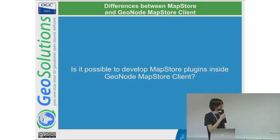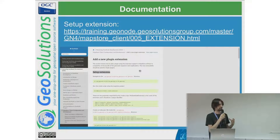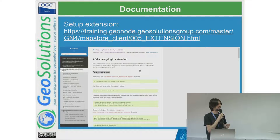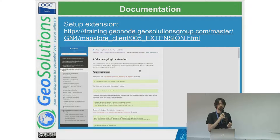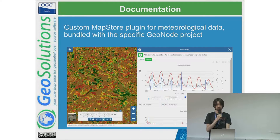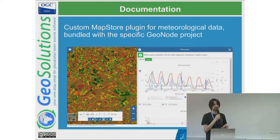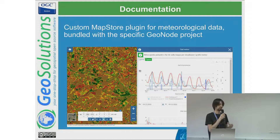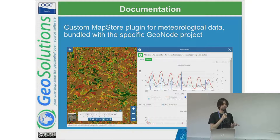To enhance GeoNode, we took advantage of a MapStore core concept called MapStore extensions, and introduced MapStore extensions into GeoNode. This way, for specific applications and workflows, we can add a specific plugin. For example, we needed to visualize meteorological data — a plugin not available in either MapStore or GeoNode. For that specific work we created a separate repository, built a zip file, and included it in the GeoNode environment without forking the main core repository.